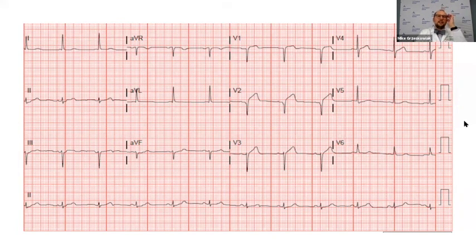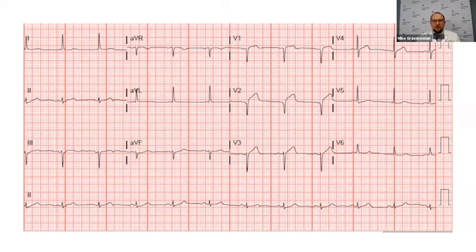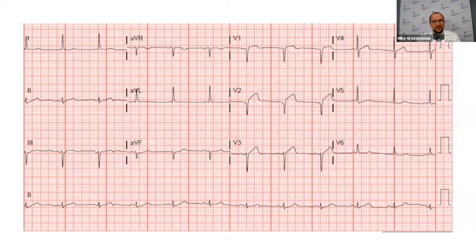In the ED, we saw this EKG and were concerned for a STEMI, but the history just didn't make sense — this guy was doing 27-mile bike rides. This could be a repolarization abnormality since he's a very fit person. So we didn't take him straight to the cath lab. First, we took an ultrasound, put a probe on him, and saw that his whole anterior wall was down. That got us super concerned, and we took him straight to the cath lab.